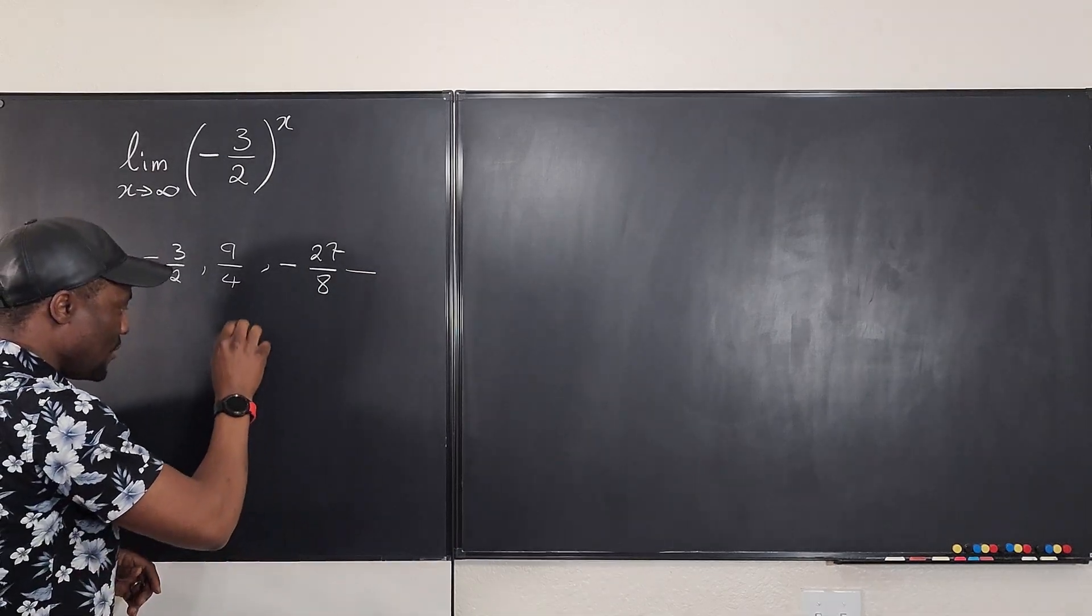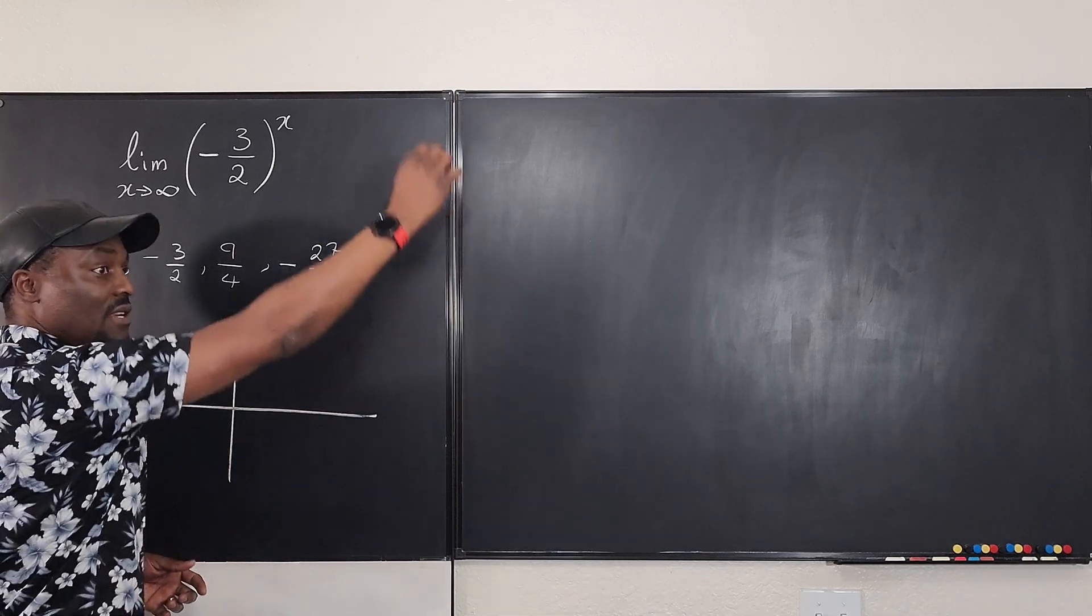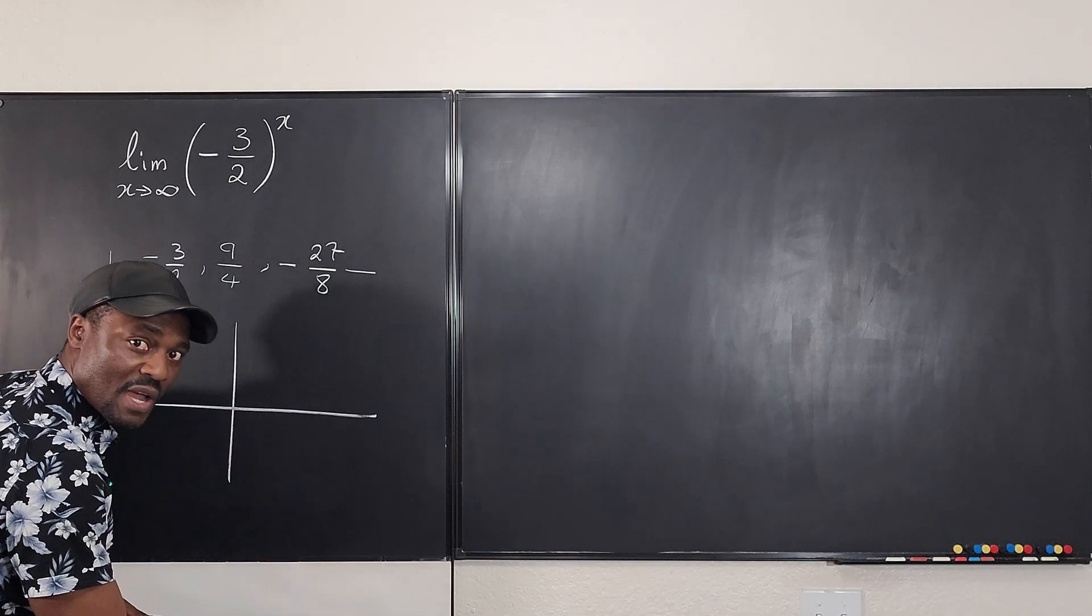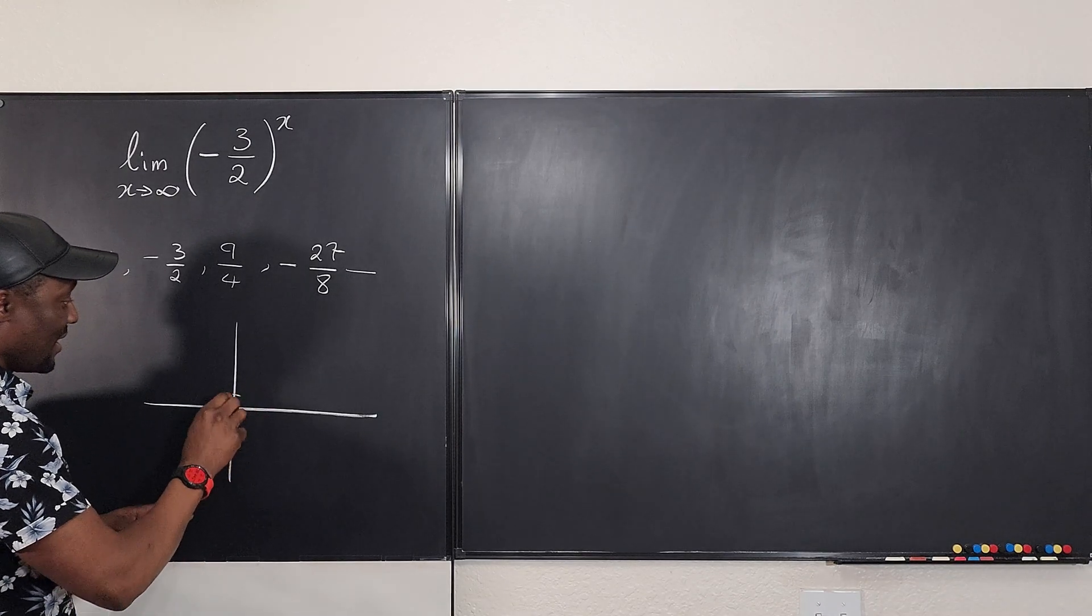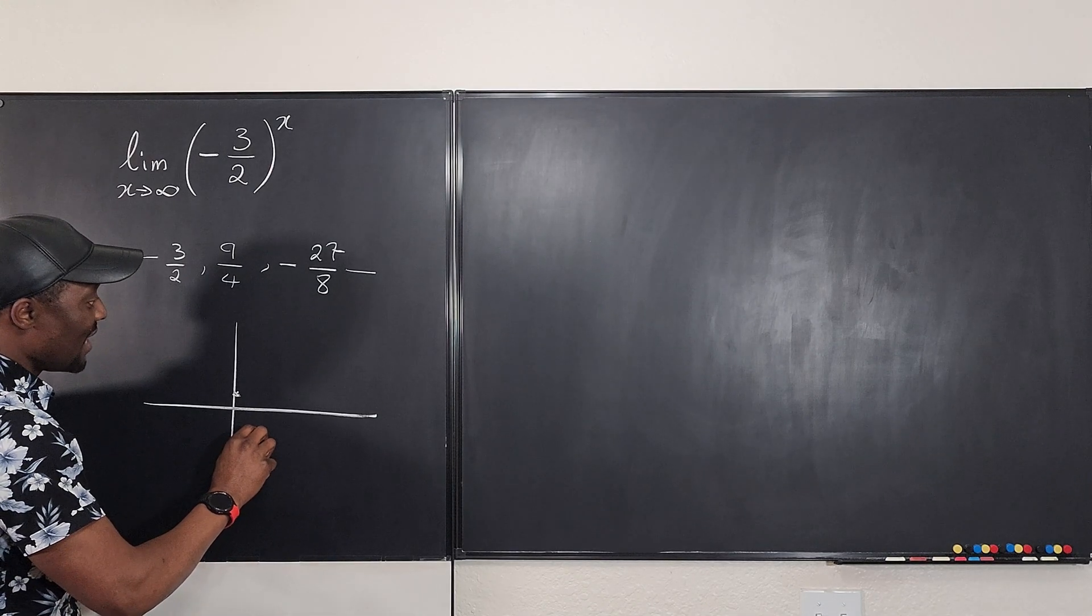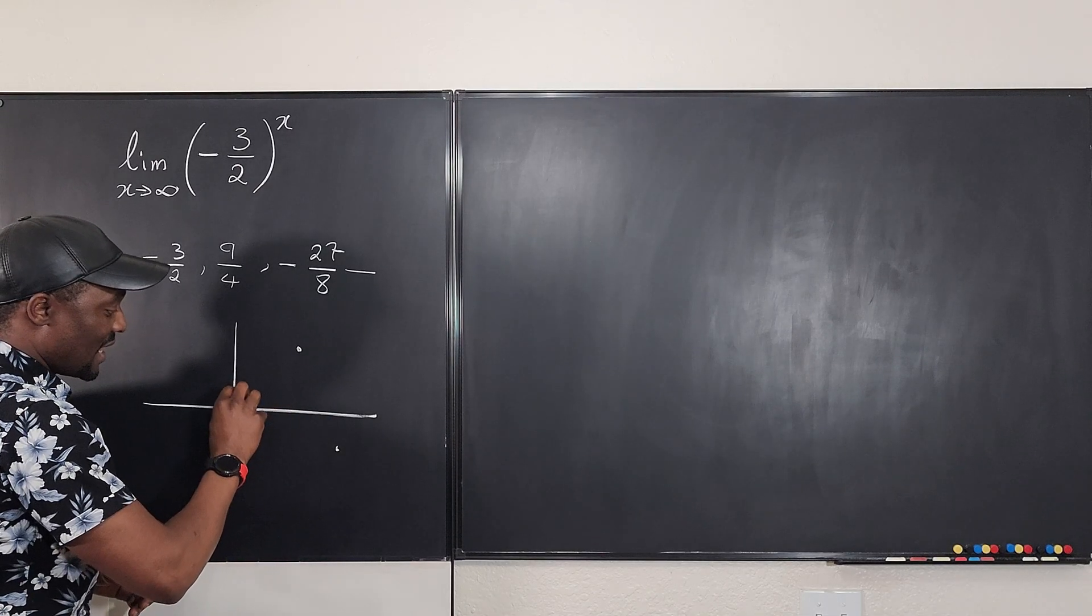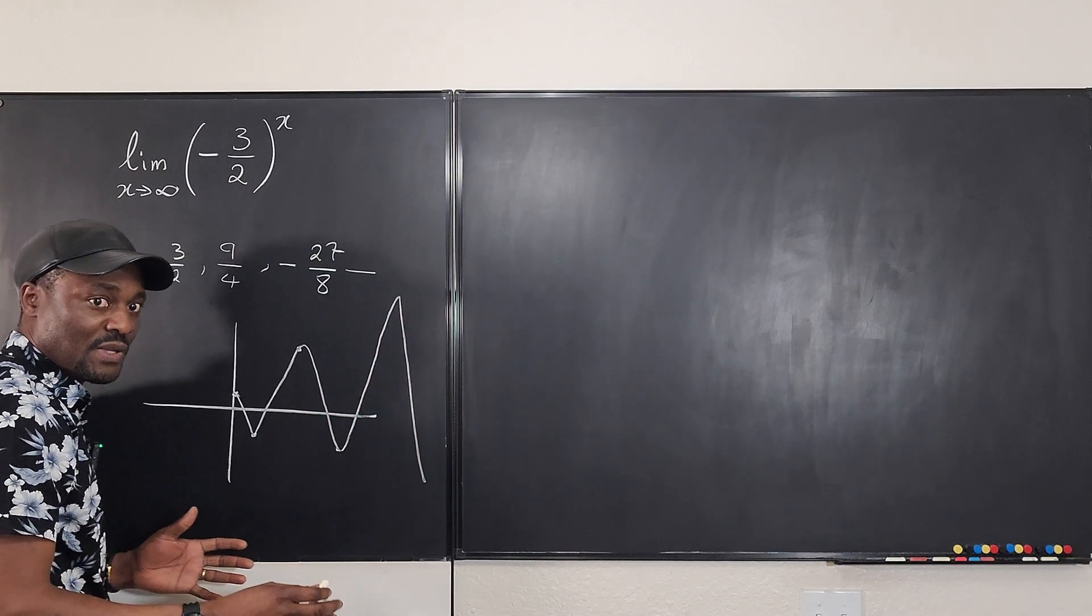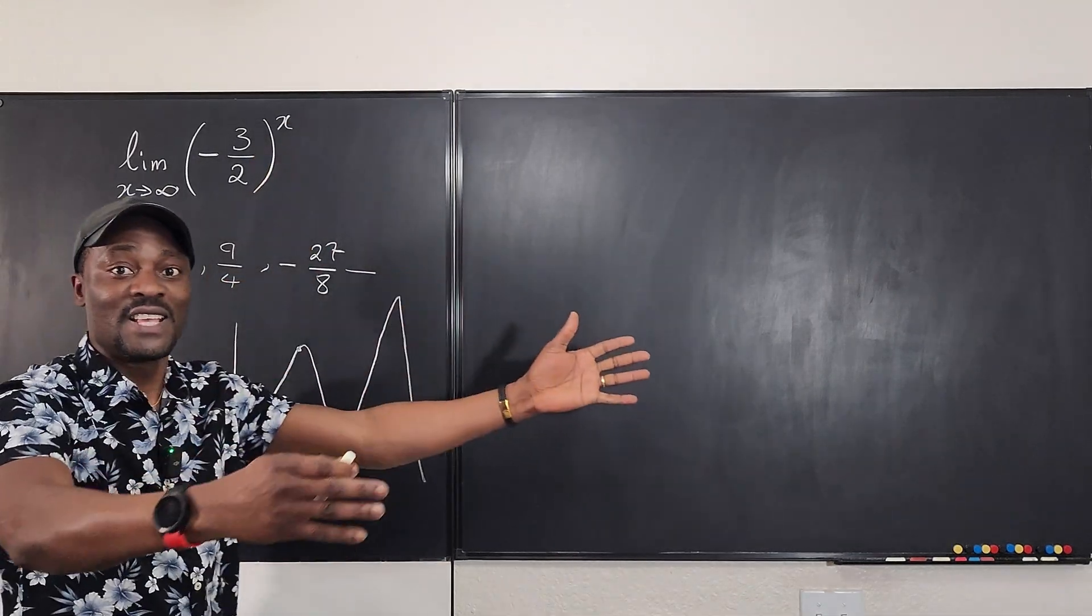Do you observe something that the values on our graph, typically when something goes to positive infinity, it should keep increasing. It goes to negative infinity, it keeps going this way. But this guy started from 1, and then it went to negative 1.5, somewhere here. And the next one was 2.25. And you see what it's doing? This graph is behaving like this.